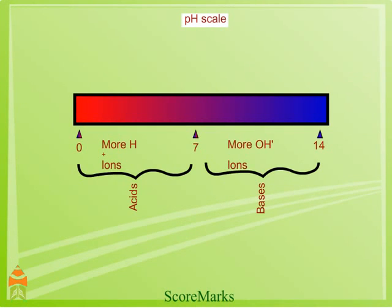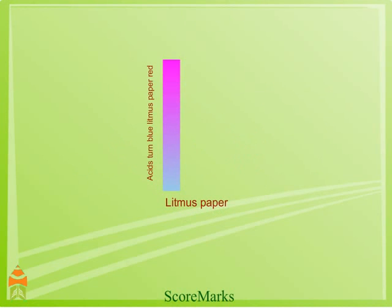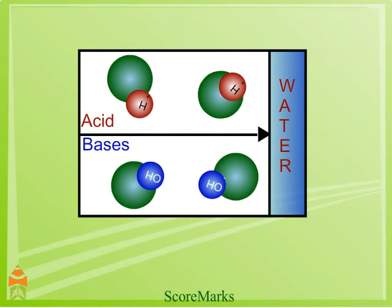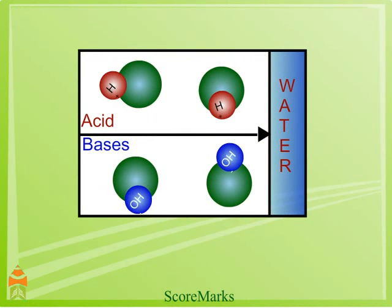The pH value of an acid is less than 7.0, whereas the pH value of a base is greater than 7.0. Acids change the litmus paper to red, whereas bases change the litmus paper to blue. Acids free hydrogen ions when mixed with water.